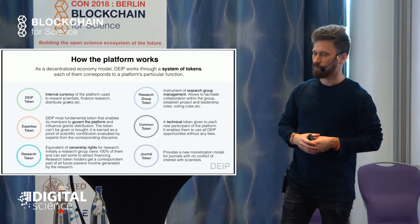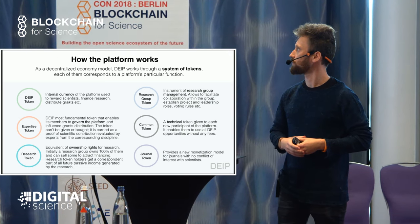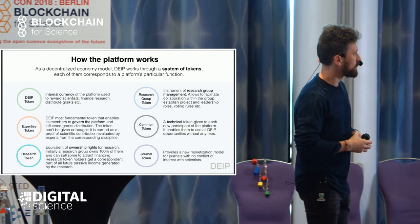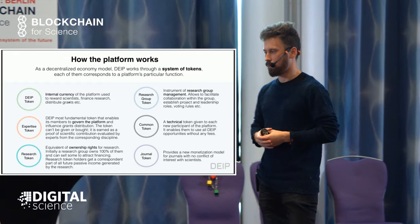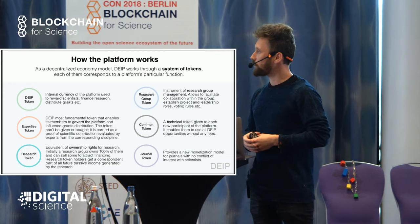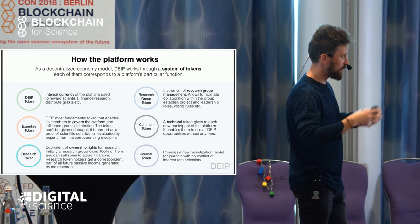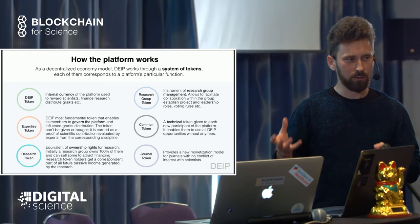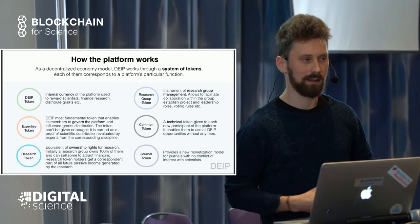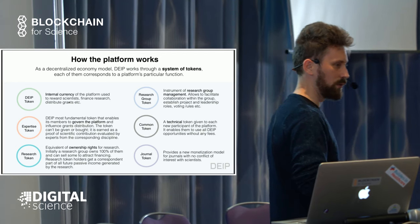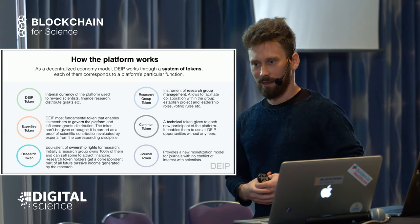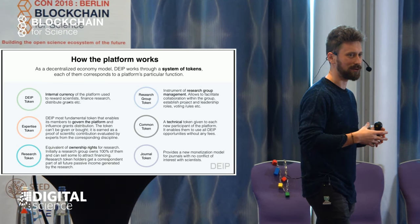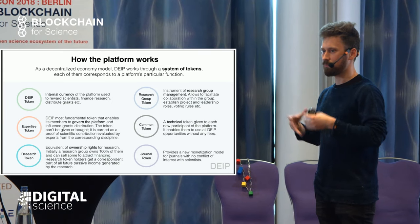Research group token is a governance token for a research group — mostly like voting shares of a research group. Common token is a technical token which allocates throughput within the network. And journal token is also a very interesting model for journals, which will avoid conflict of interest with research projects, because currently journals obviously have this conflict of interest. Journals were designed to promote good research and disseminate scientific knowledge, but because of conflict of interest and commercial models, now they're more chasing hype and profit, which is definitely not a good way to promote science or quality.